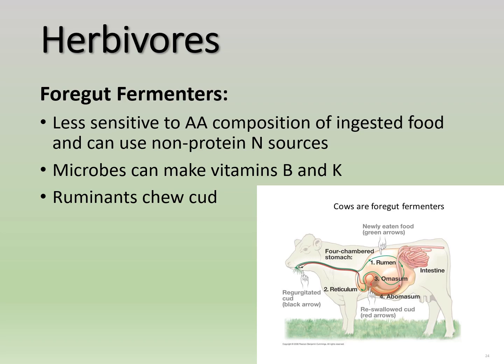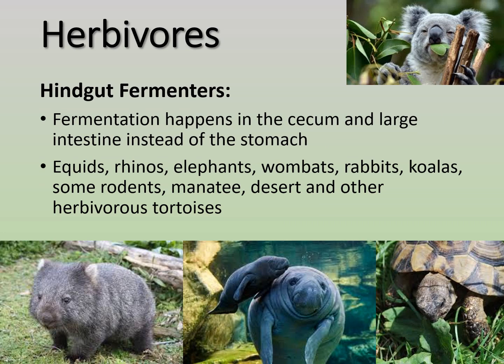Specifically with ruminants, they chew their cud — they regurgitate food from the rumen back into the mouth, re-chew it, and swallow again. This aids mechanical digestion and supports the fermentation happening in their stomach. It's very normal behavior for ruminants.